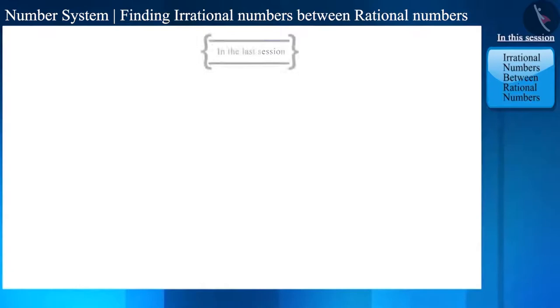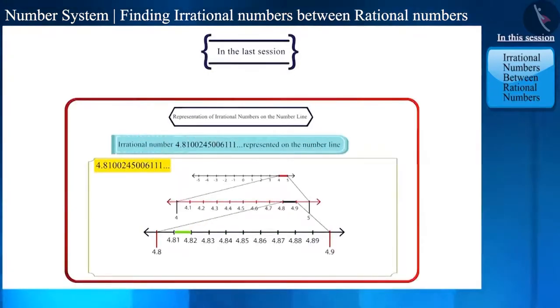The digits after the decimal of irrational numbers are infinite and unlimited. So it is difficult to represent them on the number line. But we can definitely tell between which two numbers it is located.